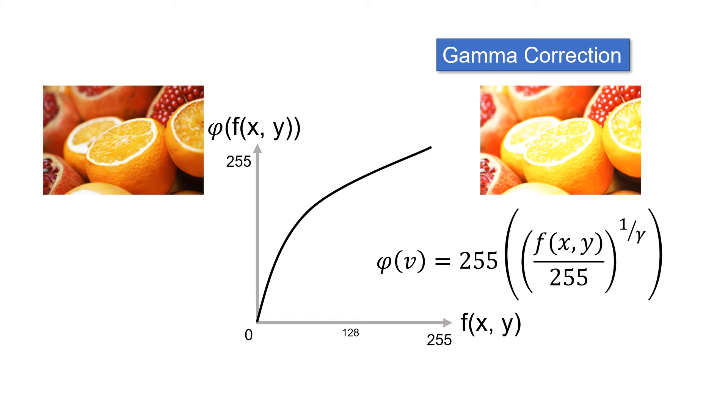Gamma correction is a non-linear mapping from original value to new value. It uses a power function by raising the original normalized value by one over the gamma value. Note the division by 255 to normalize the value between zero and one before raising it to the power. Also note the multiplication of that value by 255 to give the pixel color.